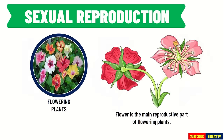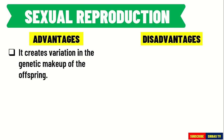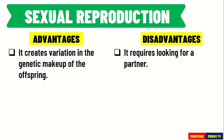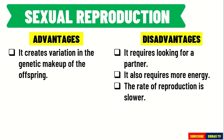In flowering plants, the main reproductive organ is the flower. The advantage of sexual reproduction is that it creates variation in the genetic makeup of the offspring. This variation enables the offspring to adapt successfully to changing environments. On the other hand, the disadvantages of sexual reproduction are: since it involves two parents, it requires looking for a partner; it also requires more energy; and because of this, the rate of reproduction is slower.